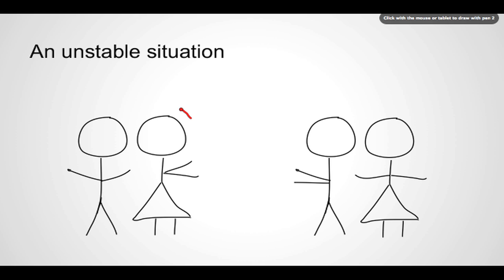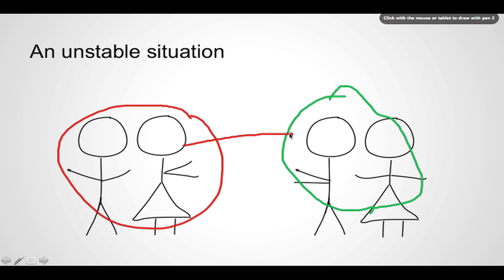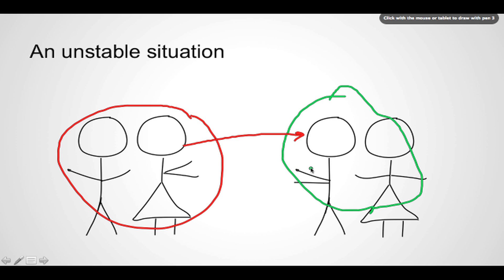If we consider the situation in which this man and this woman are paired up, and this man and this woman are paired up, but actually the woman from the red matching would prefer to be with the man from the green matching over her current partner, and the man from the green matching would also prefer to be with the woman from the red matching over his current partner. So in this case, there's a danger that these two might run off and decide to be partners for the dance together and break the matching.